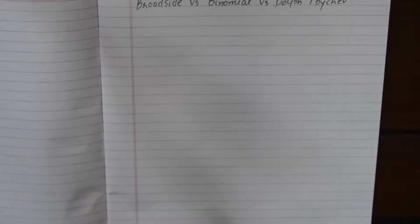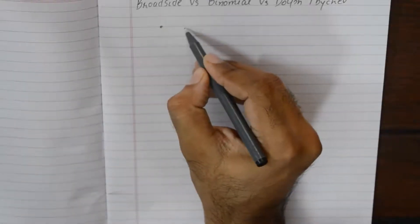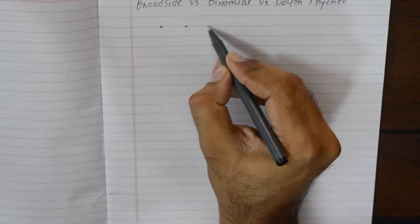These are broadside array, binomial array, and Dolph Chebyshev array. Please understand all these arrays are examples of collinear arrays. By collinear array we mean that the spacing between the elements will remain the same.